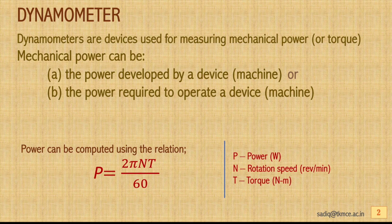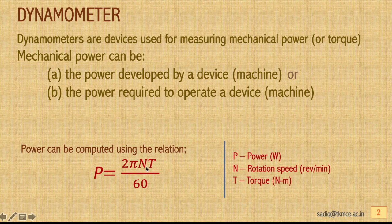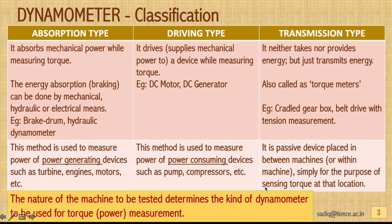Dynamometers are devices used for measuring mechanical power or torque. Mechanical power means the power that can be developed by a device or a machine, or the power required to operate a device such as a machine. Power is a computed parameter, computed based on the equation where N is the rotation speed in revolutions per minute and T is the torque in Newton meters.